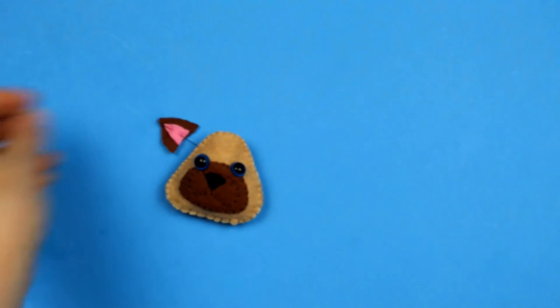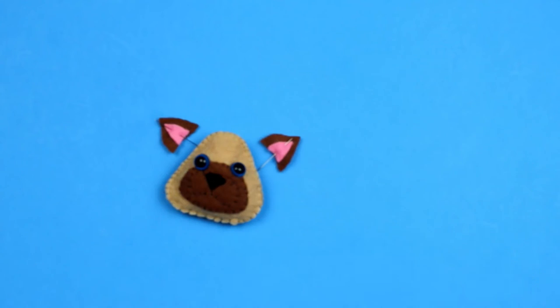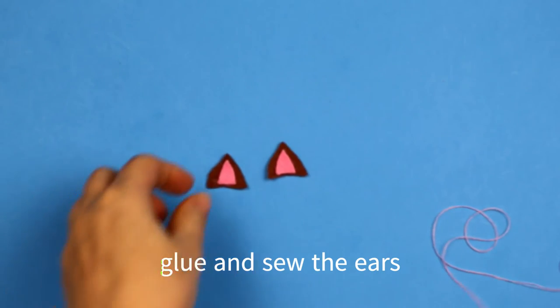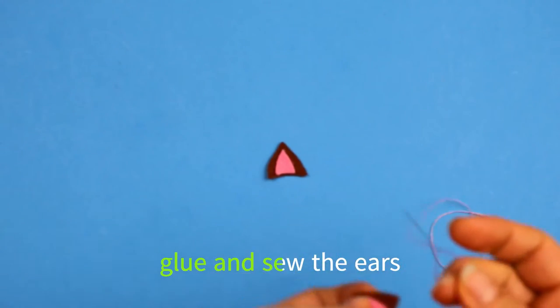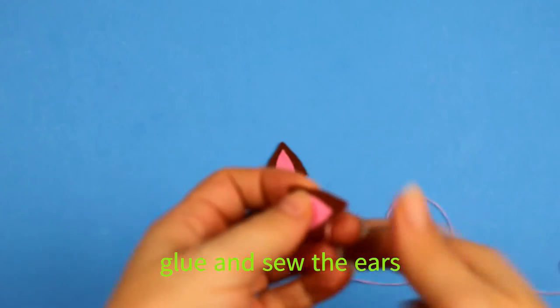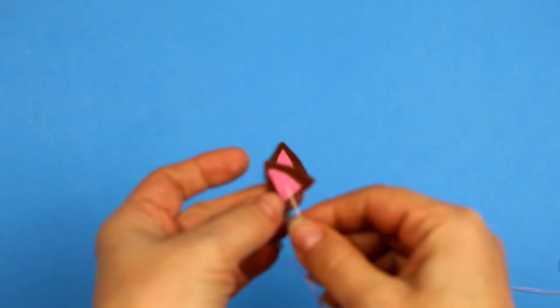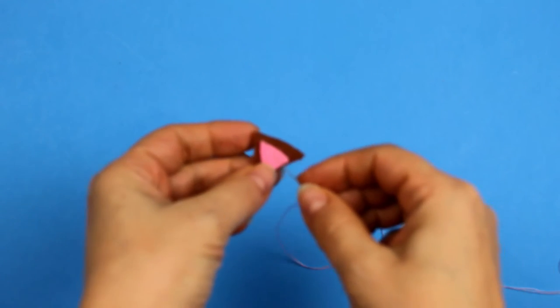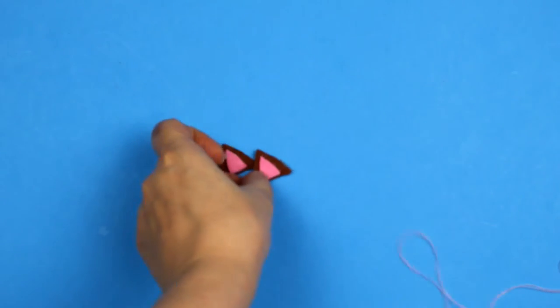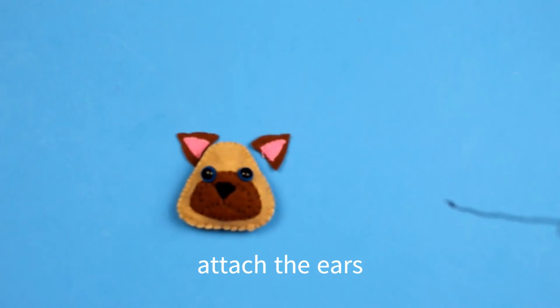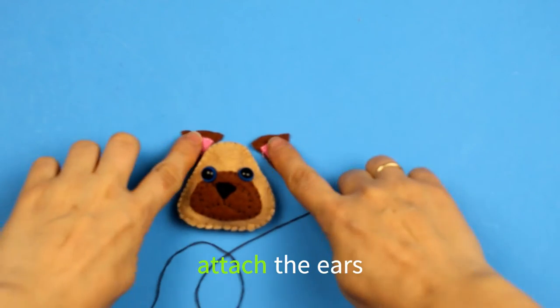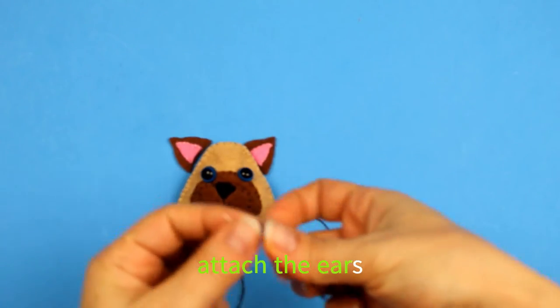We're gonna attach the ears to the head, so first step would be to glue the ears in place, the pink inner part, and then sew it. And then we're gonna sew the ears to the head.